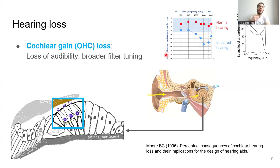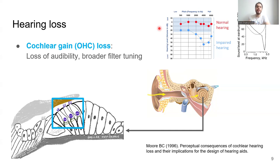Cochlear gain loss is associated with a loss of audibility and is clinically diagnosed by an audiogram, as shown in this figure, where we lose our ability to hear soft sounds, especially at high frequencies. This happens with aging. But cochlear gain loss or outer hair cell loss is also associated with more nonlinear effects such as frequency selectivity distortions, or the broadening of the filters in the basilar membrane. A simple diagram here shows how the tuning of the basilar membrane of a normal hearing cochlea, which is quite selective in frequency, gets smoothed to respond to all sorts of frequencies after hearing loss.